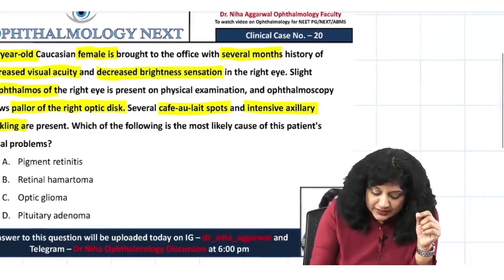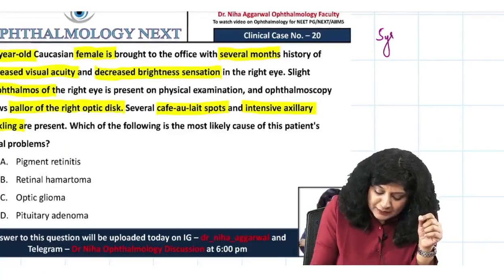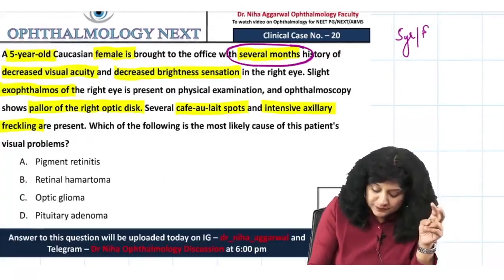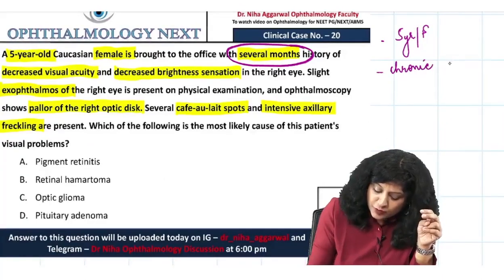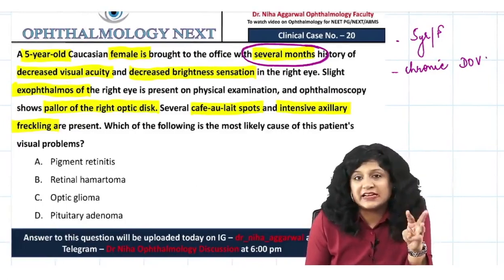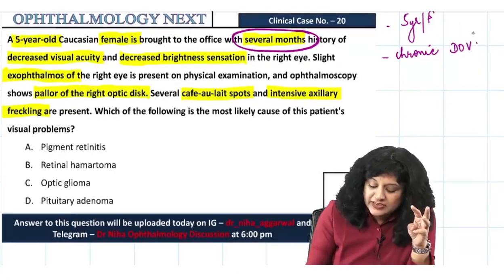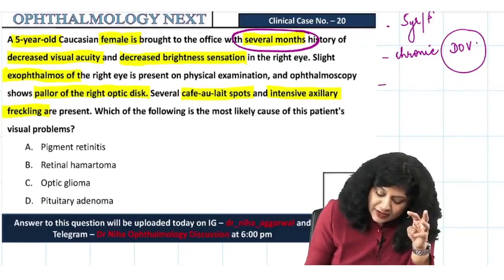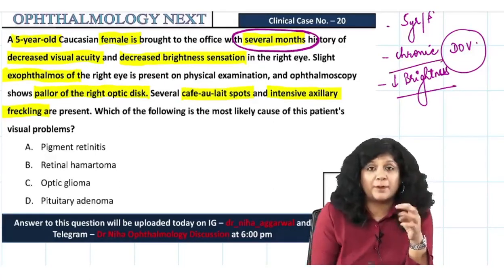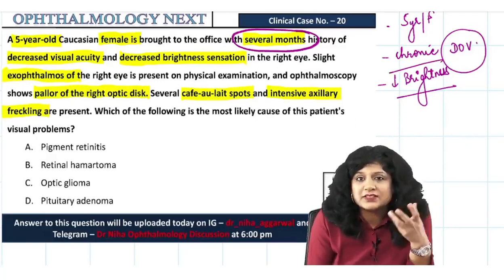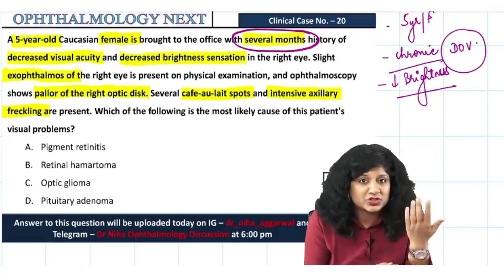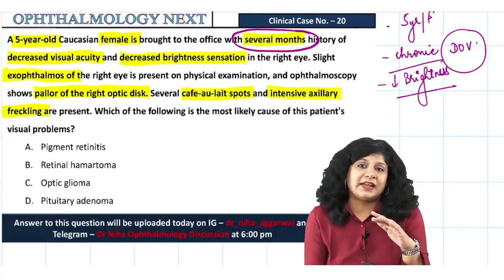This is a five-year-old female with several months history — so this is a chronic condition. There is diminution of vision and decreased brightness sensation. Now, decreased brightness is a feature related to the optic disc. This gives us a clue that there may be some problem with the optic disc, since both vision diminution and brightness sensation are disturbed.